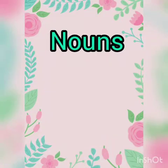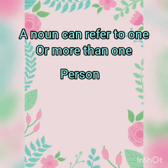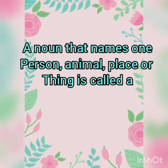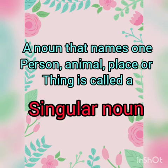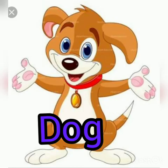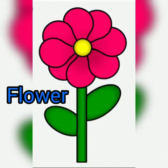Nouns singular and plural. A noun can refer to one or more than one person, animal, place or thing. A noun that names one person, animal, place or thing is called a singular noun. For example: boy, dog, house, flower.